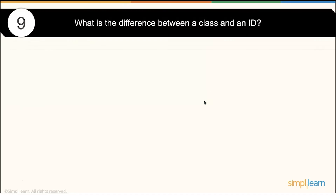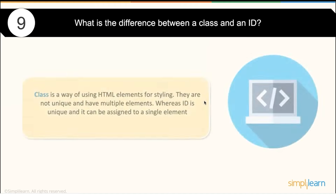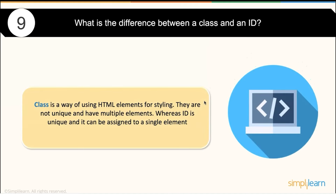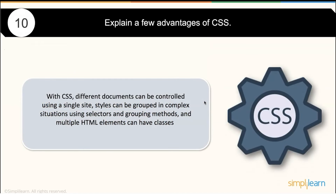What is the difference between class and ID? These are two different types of selectors in CSS. Class is used for HTML elements that are not unique — multiple elements can share the same class. ID, on the other hand, is unique and can only be assigned to a single element. With CSS, different documents can be controlled using a single style, and styles can be grouped to offer consistent look across multiple HTML pages.